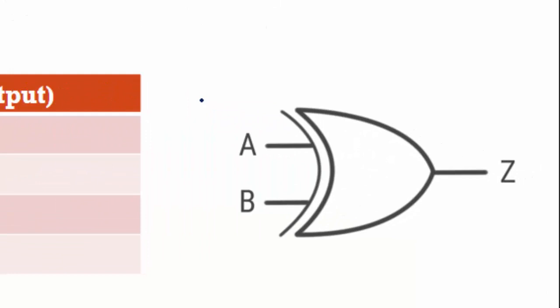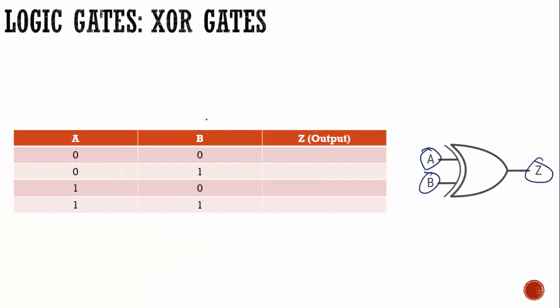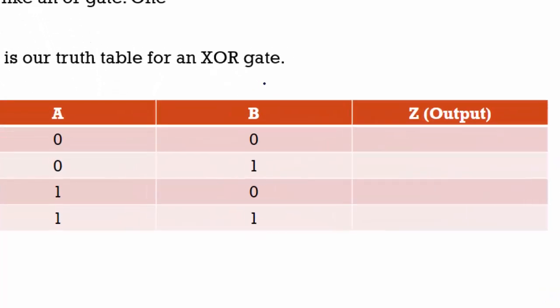Our next gate is an XOR gate. We have two inputs and an output. In the last segment you may have been saying 'that's not OR' — that's where XOR gates come into play. An XOR gate is an exclusive OR gate, and that's why the X is there — it really means it's an exclusive OR gate. It will only show a true value if one of the inputs is true, not both like an OR gate. Only one of them can be true.